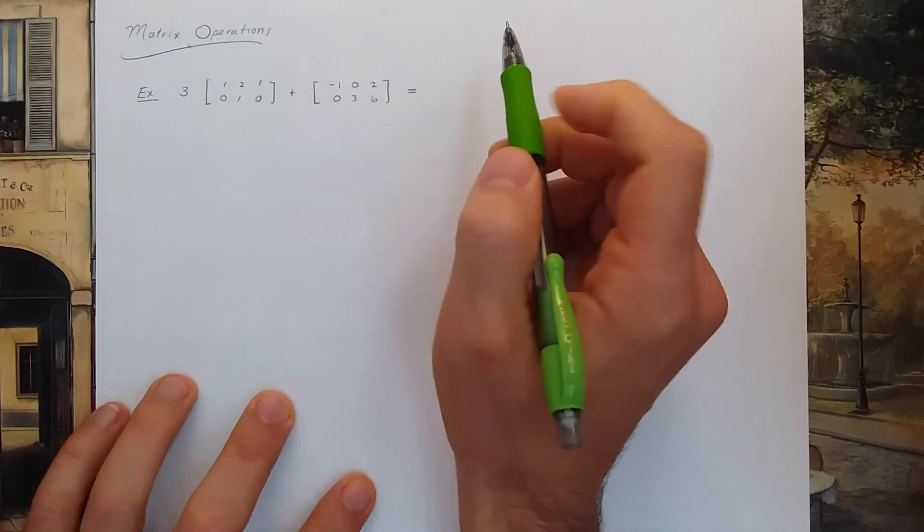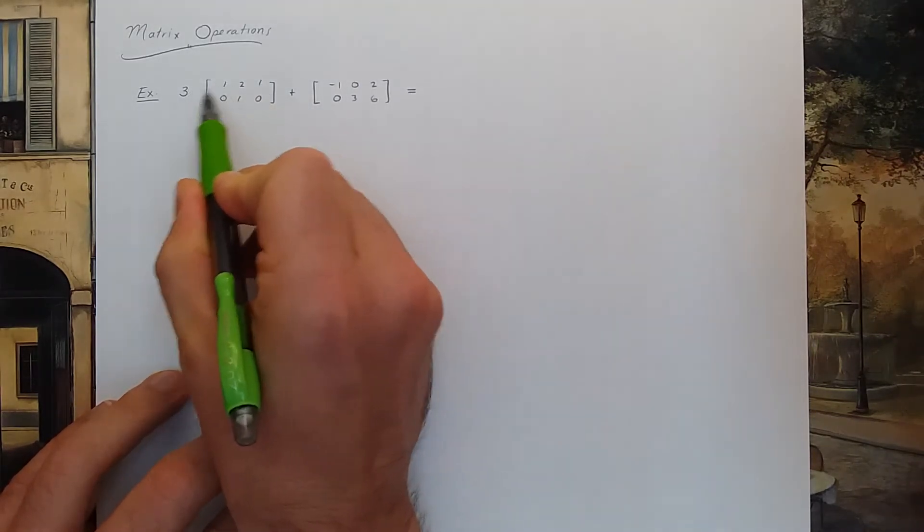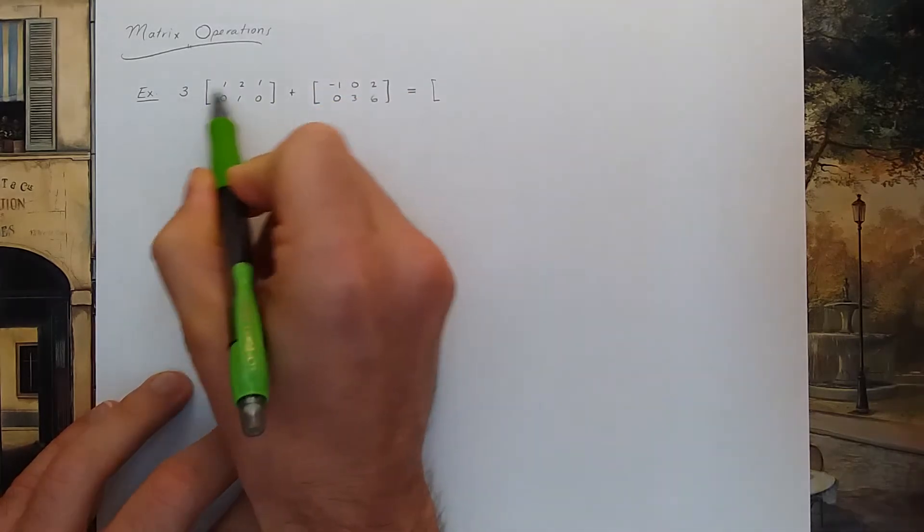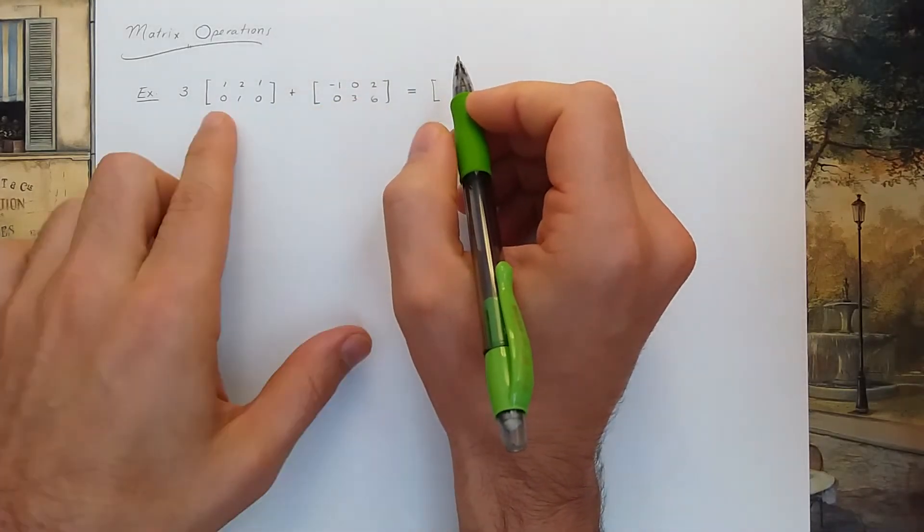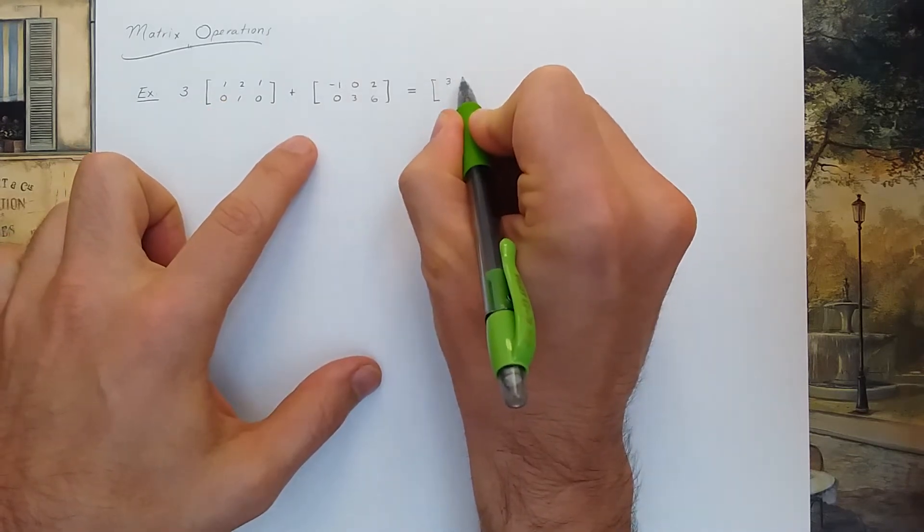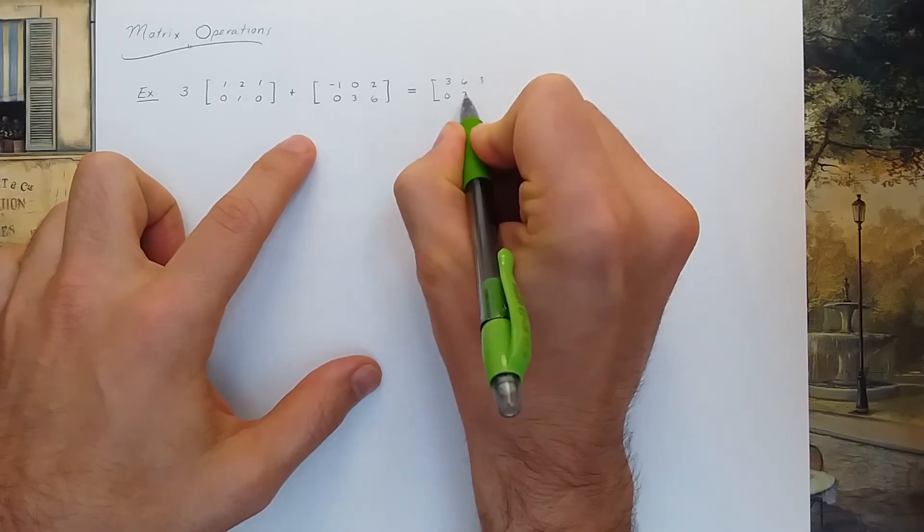These are fairly self-explanatory operations. You take the first matrix and multiply every single entry by 3. That's what 3 times this matrix means. So you scale every entry by this constant 3 to get 3, 6, 3, 0, 3, 0.